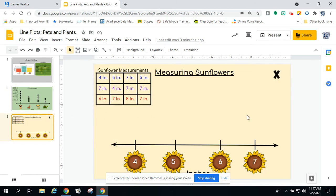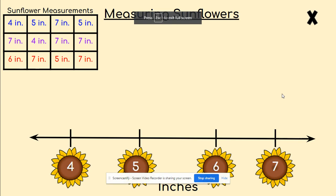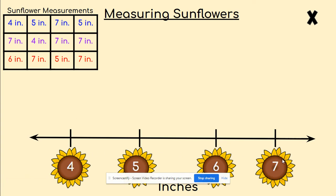So here's our next line plot. Notice how my information is going to look a little different here. I have a table of information — my last one had tally marks. This one has a table and it has a mixture of all different measurements, which are in inches. The title of this particular line plot is measuring sunflowers.